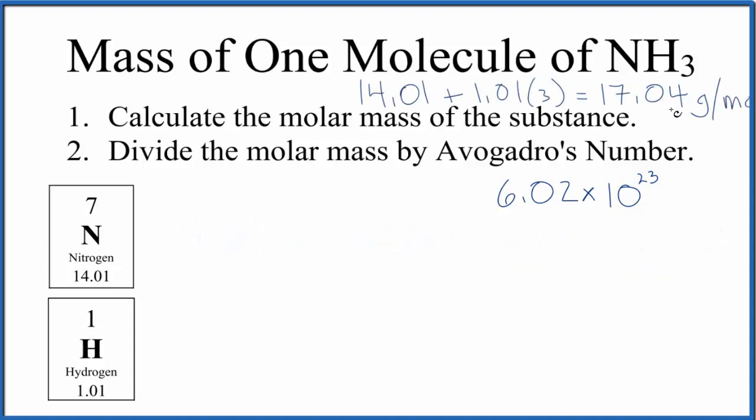So we have the molar mass for ammonia. We're just going to divide that by 6.02 times 10 to the 23rd. That'll give us the mass of one molecule of ammonia, NH3.